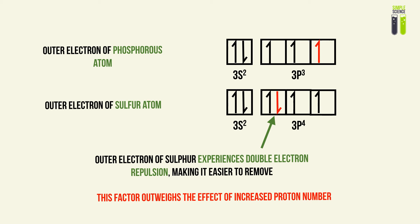This is similar to the effect of repulsion shielding that we looked at previously. And again, we must mention that this factor outweighs the effect of increased proton number. The key thing to notice is that the electron will experience double electron repulsion.